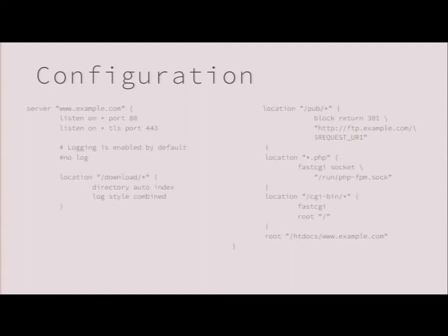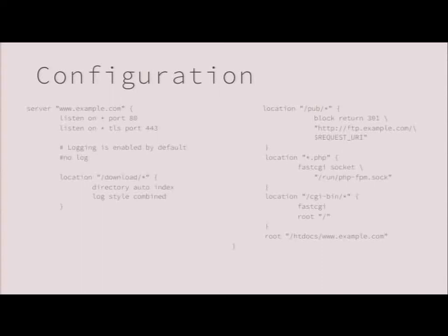For more advanced configuration: you can listen on multiple ports, add additional server names for name-based aliases. Logging is enabled by default but can be turned off. Location matching also uses fnmatch at the moment. There are a few options all documented on the man page — the man page is in really good shape. Blocking rules support redirections and so on. FastCGI works well in combination with php-fpm of course, but also with many other frameworks.